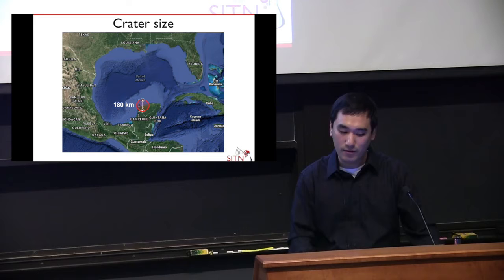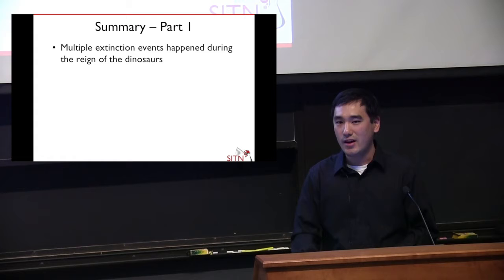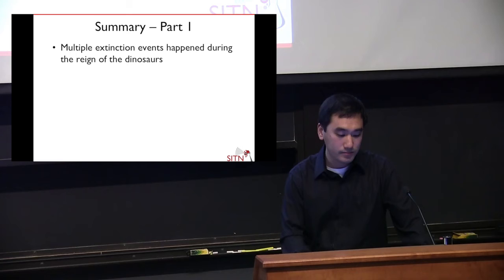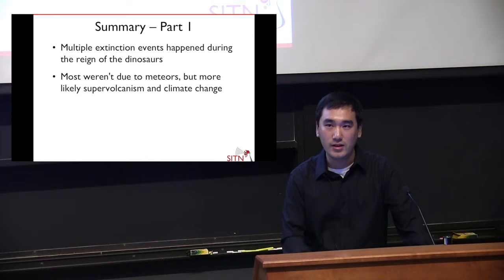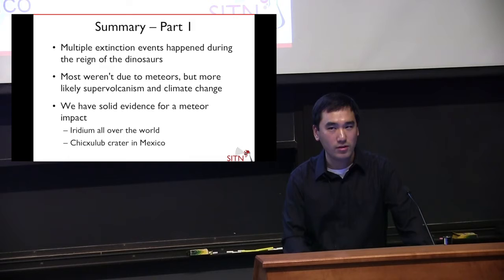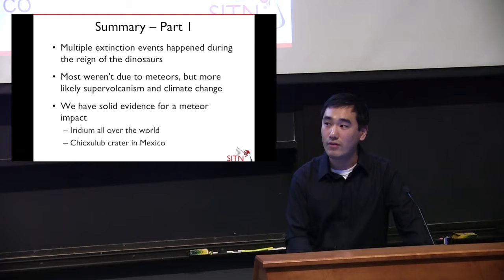Let me summarize what we've covered so far. The final event that killed off the dinosaurs wasn't the first mass extinction event — there were multiple before and during the reign of the dinosaurs, causing loss of over half of all species on Earth. Most of these extinction events weren't due to meteors; we think supervolcanoes were more likely the primary cause. The only reason we think a meteor killed off the dinosaurs at the very end is because we have solid evidence: iridium deposited in geological layers about 65 million years old, and a crater that formed around the same time the dinosaurs went extinct.